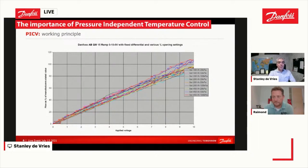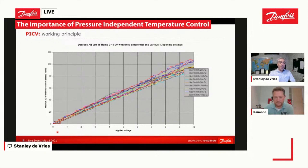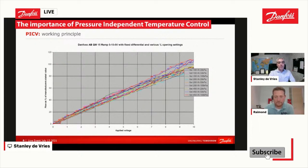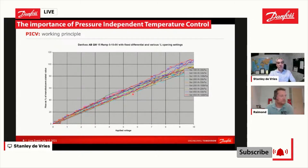If we look at this graph, on the bottom we see a 0 to 10 volt control signal and here we see the actual flow. The different colors of lines basically represent different settings of the valve and also different pressures — so different available pressures.